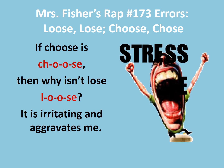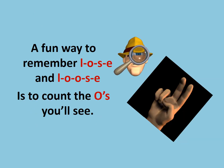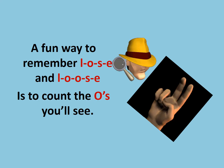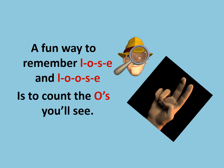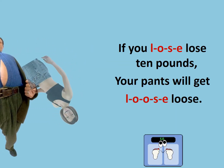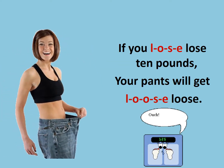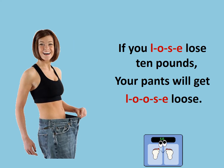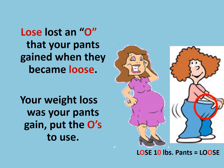It's irritating and aggravates me. A fun way to remember L-O-S-E and L-O-O-S-E is to count the O's, you'll see. If you L-O-S-E, lose ten pounds, your pants will get L-O-O-S-E, loose. Lose lost an O that your pants gained when they became loose. Your weight loss was your pants' gain. Put the O's to use.